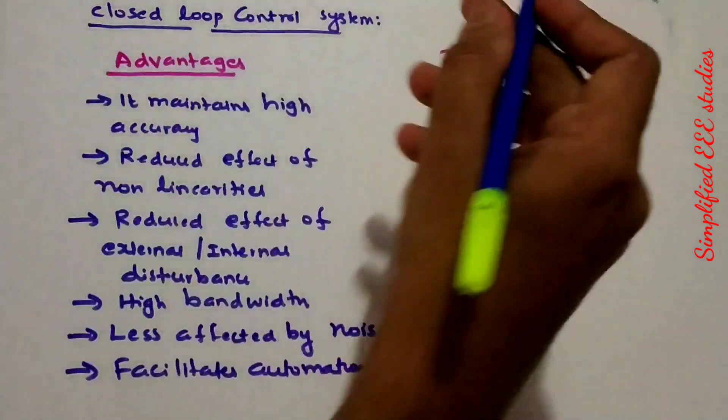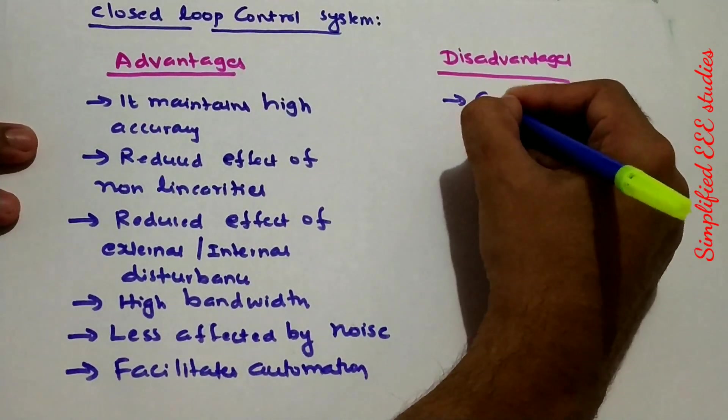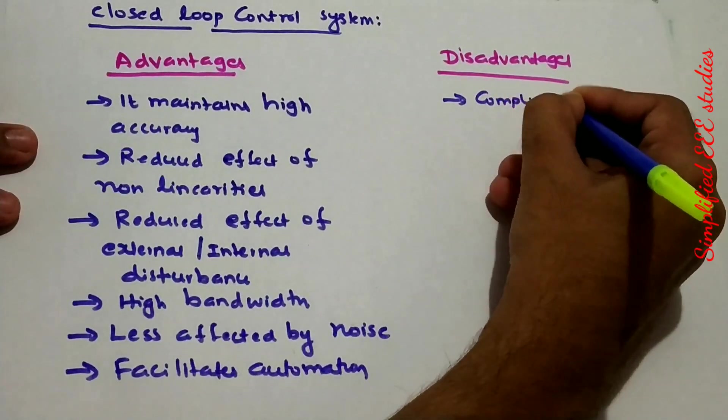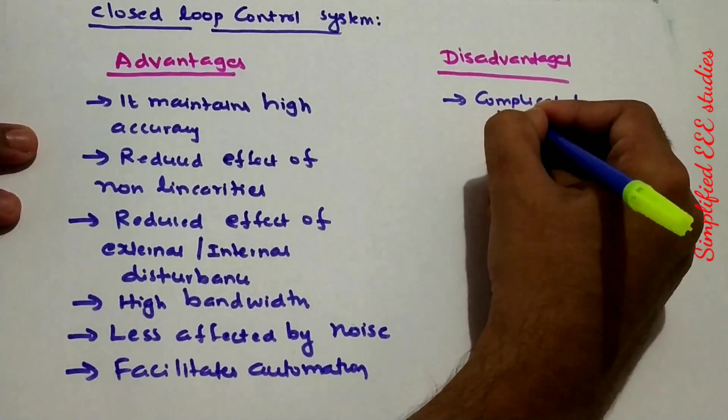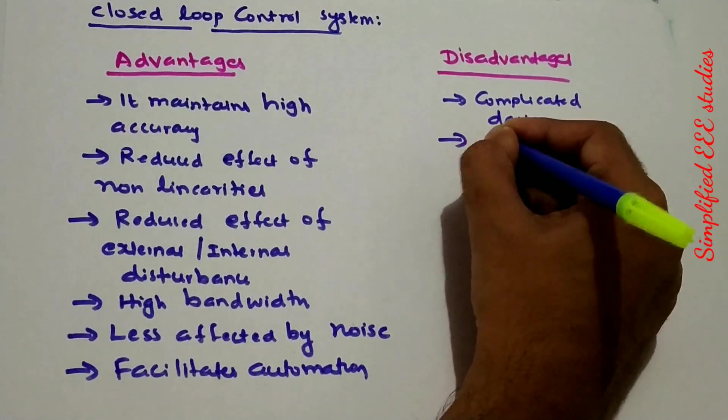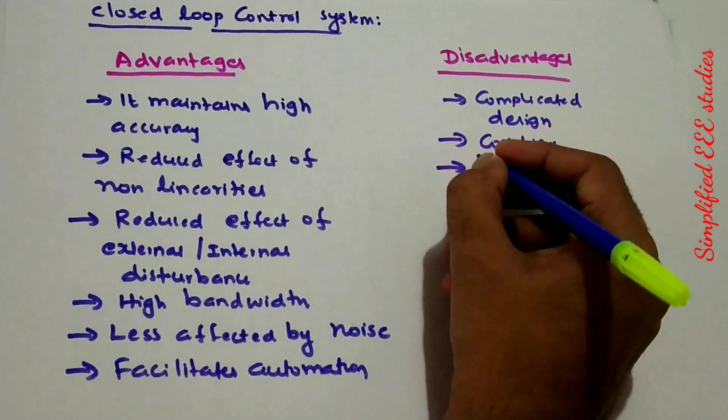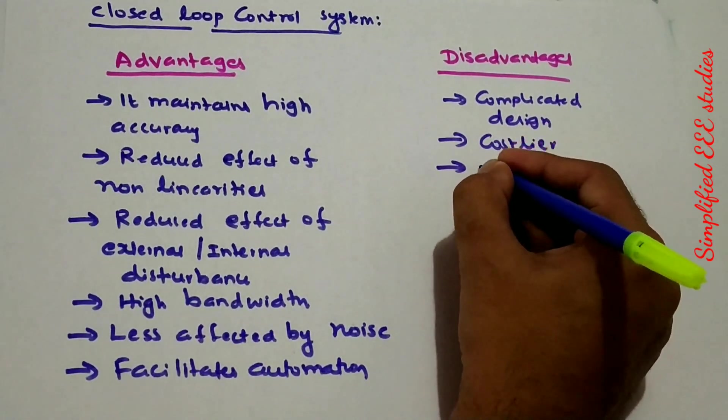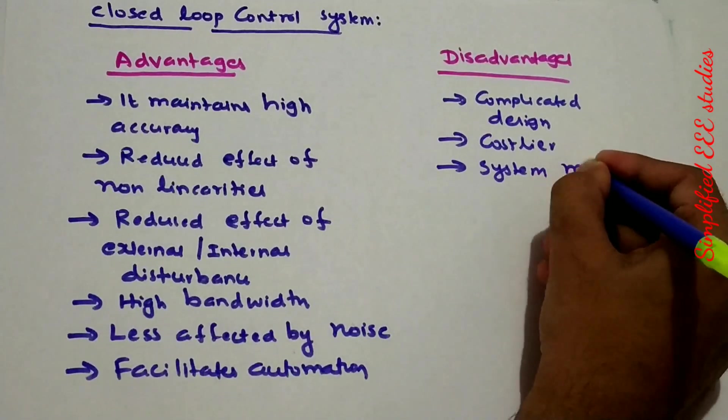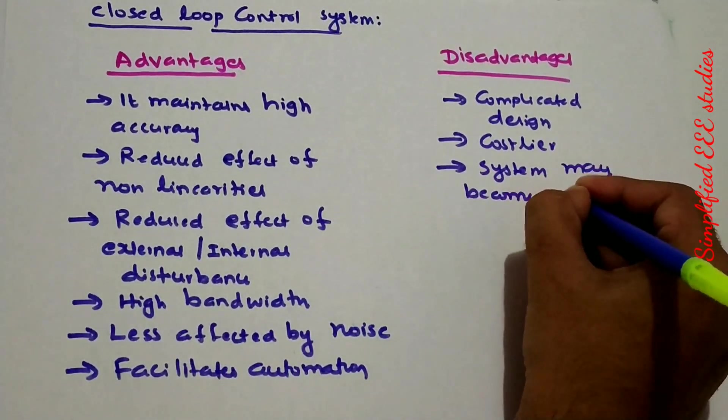What are the drawbacks of closed loop control system? First drawback is complicated design. Maintenance will be costlier. System may become unstable.